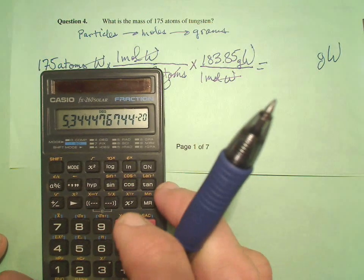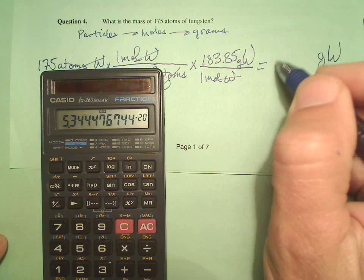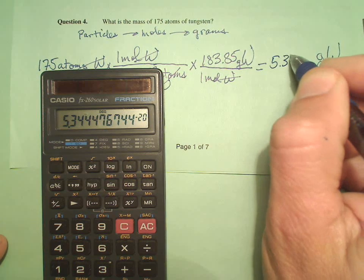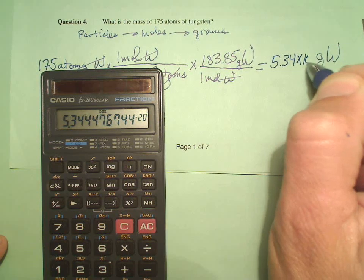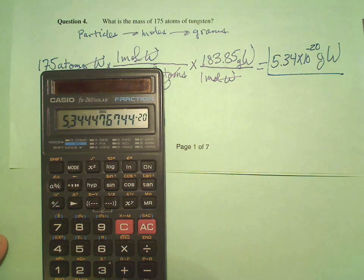5.53 times 10 to the negative 20. Small. Well, it looks like we're good to 3 sig figs. So 5.34, looks like. 5.34 times 10 to the minus 20 grams of tungsten. Teeny tiny, you're not going to measure it with any balance we have.